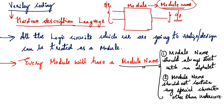Every circuit we design must be given a specific module name. There are two rules: the module name should always start with an alphabet, and the module name should not contain any special characters other than underscore.